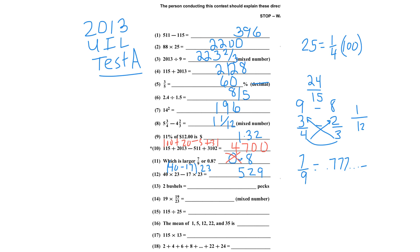Number 13: 1 bushel is 4 pecks. So 2 bushels would be 8 pecks. You have to memorize that 4 pecks equals 1 bushel, just like 4 quarts is a gallon.